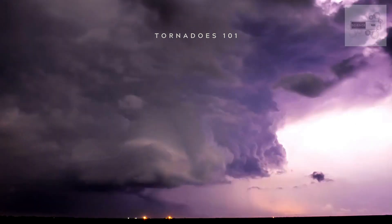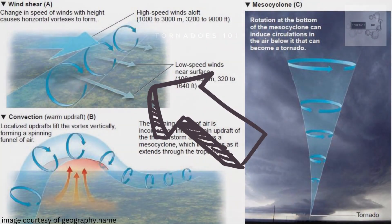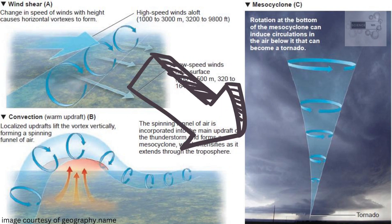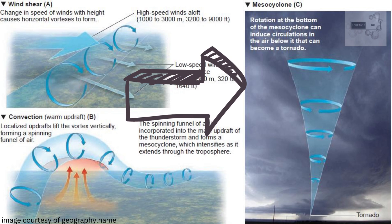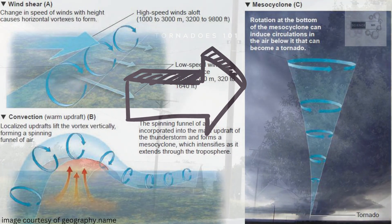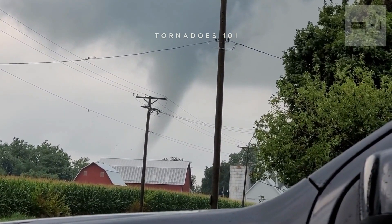Tornadoes are formed from powerful thunderstorms, and occur when warm, moist air rises and meets with cool, dry air. This creates instability in the atmosphere and can cause rotation in the storm. As the rotation becomes more intense, a funnel cloud may form, eventually touching down and becoming a tornado.